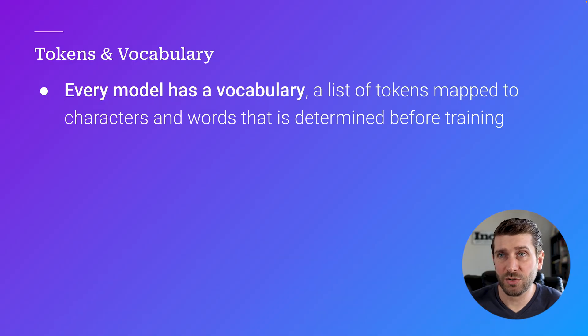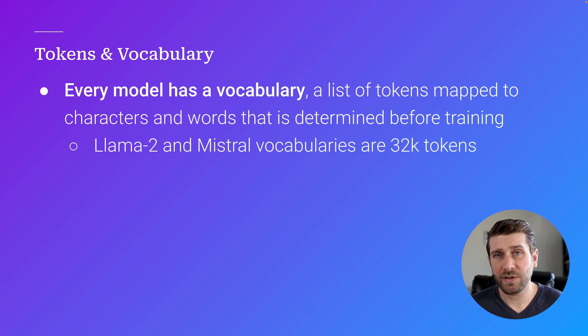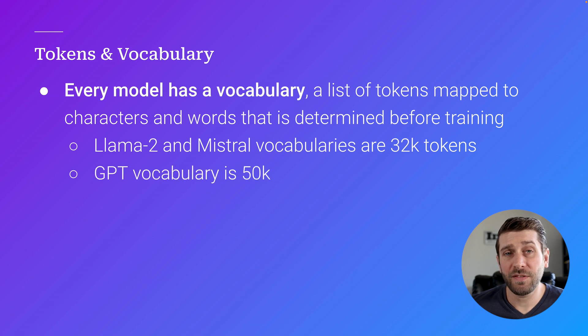Every model has a vocabulary, and this is something that's set before the model is trained. Llama2 and Mistral vocabularies are both 32,000 tokens long, and the GPT vocabulary is 50,000 tokens. It may seem like larger vocabularies are probably better, but there's actually a trade-off. A larger vocabulary could mean that larger words or more domain-specific terminology gets assigned its own meaning from the training data, which could be good in certain situations. But if it's training on those tokens, then it's not training on other tokens, and it can also just require more memory for training and inference.